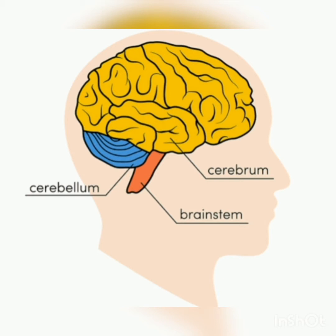There are basically three parts of our brain: cerebrum, cerebellum, and brain stem, which is also called medulla oblongata. First, our brain is protected by a bony structure called the skull. And there is a fluid between the skull and the brain which protects our brain against any damage or injury.